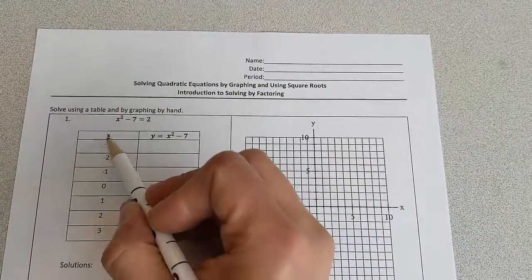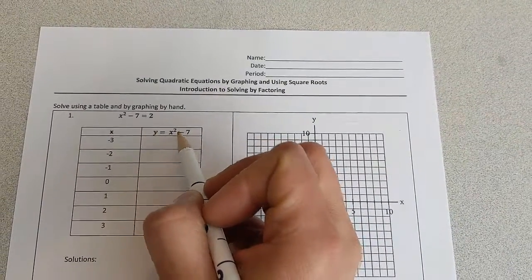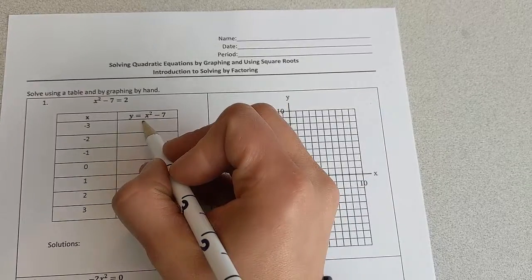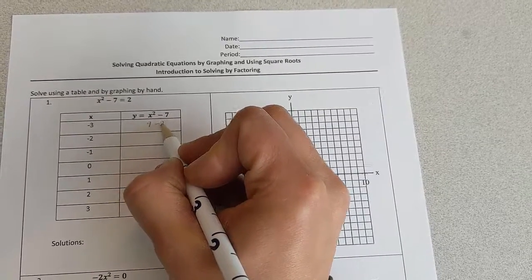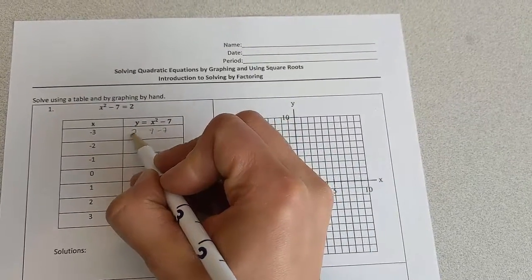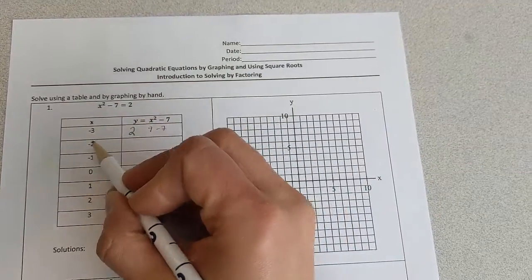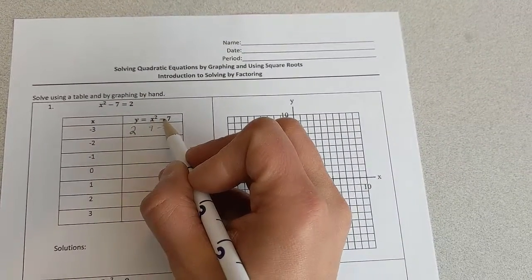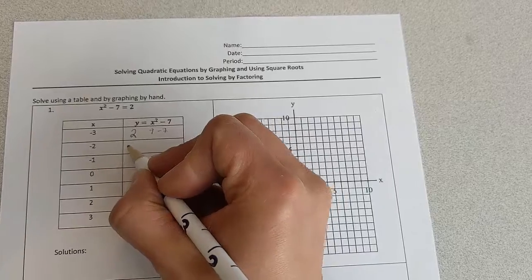So if x equals negative 3, we're just going to plug that into the equation. Negative 3 squared is 9 minus 7, which gives me 2. If I plug in negative 2, I get 4, 4 minus 7 would give me negative 3.